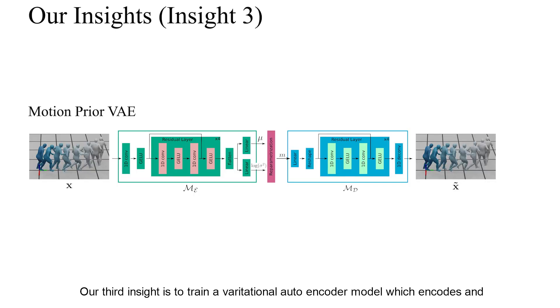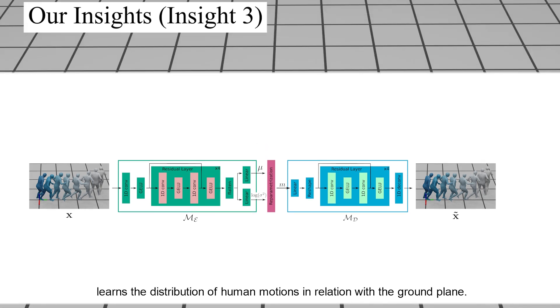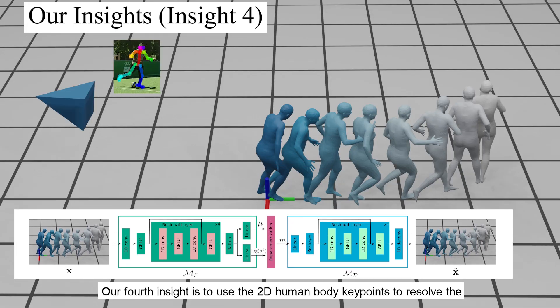Our third insight is to train a variational autoencoder model, which encodes and learns the distribution of human motions in relation with the ground plane. Our fourth insight is to use the 2D human body keypoints to resolve the human articulated pose and global pose relative to the camera.